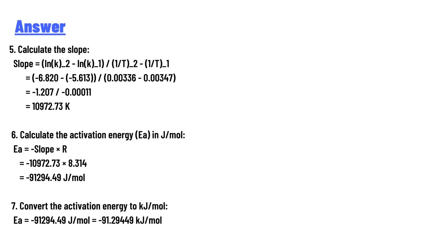Calculate the activation energy Ea in joules per mole: Ea = −slope × R = −10972.73 × 8.314 = −91,294.49 J/mol. Converting to kilojoules per mole: Ea = −91.294 kJ/mol.